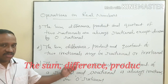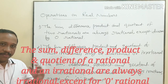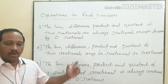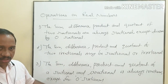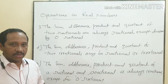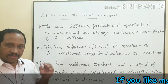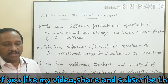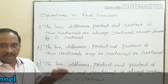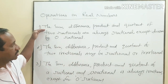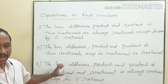Third point: the sum, difference, product and quotient of a rational and an irrational is always irrational, except for zero rational. If you add, subtract, multiply or divide a rational and irrational, the result will always be irrational except for zero rational. If you multiply zero with any irrational number, the answer will be zero, so the result will be rational because zero is a rational number. Similarly, if you divide zero by any irrational number, the result will also be zero. These are the two exceptions. Remember, division by zero is not defined. So look at the three points: the first on two rational numbers, the second on two irrational numbers, and the third on a rational and an irrational number.